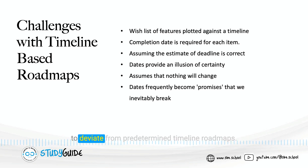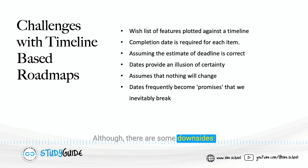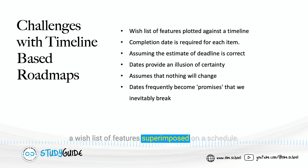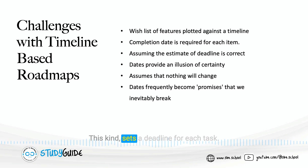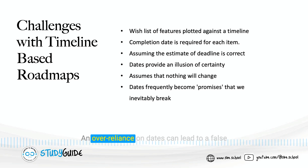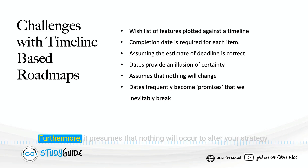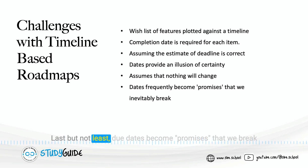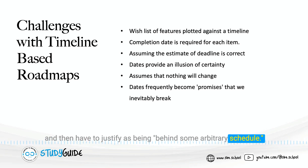It requires bravery and knowledge to deviate from predetermined timeline roadmaps. Although there are some downsides — in most cases, a roadmap just amounts to a wish list of features superimposed on a schedule. This sets a deadline for each task, necessitating an educated guess and trusting that it is correct. An over-reliance on dates can lead to a false sense of security and power over the future. Furthermore, it presumes that nothing will occur to alter your strategy. Last but not least, do dates become promises that we break and then have to justify as being behind some arbitrary schedule?